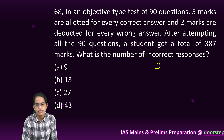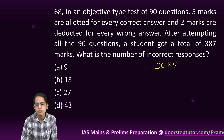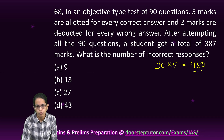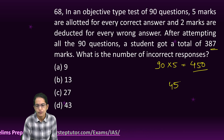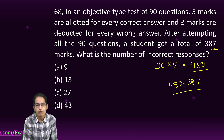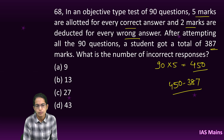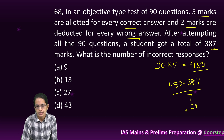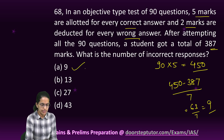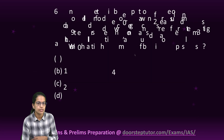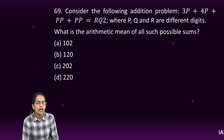In an objective test with 90 questions, 5 marks for a correct answer: maximum marks = 450. The student got 387 marks. The difference between maximum and actual marks is 450 − 387 = 63. The difference per wrong question (5 + 2 = 7) gives 63 ÷ 7 = 9, so 9 is the right answer.